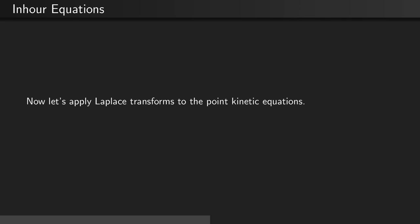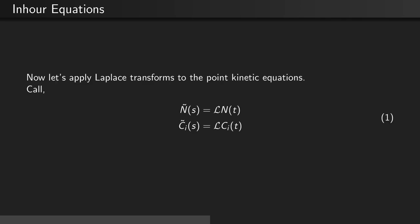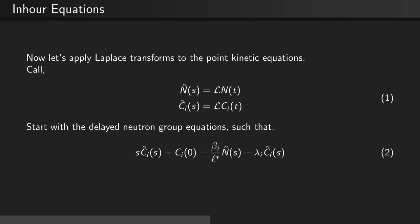Now let's apply the Laplace transforms to the point kinetic equations from before. Call Ñ(s) the Laplace transform of n(t), and C̃ᵢ(s) the Laplace transform of the concentration Cᵢ(t). Let's first start with the delayed neutron group equations, such that the frequency times the Laplace transform of the concentration of the i-th group minus the initial condition of the i-th group equals the delayed neutron fraction of the i-th group divided by the mean neutron generation time times the Laplace transform of the neutron number density, minus the decay constant of the i-th group times the Laplace transform of the i-th group concentration.